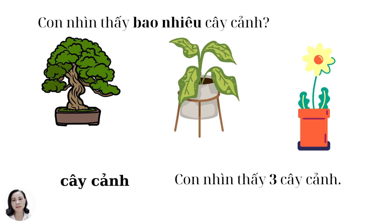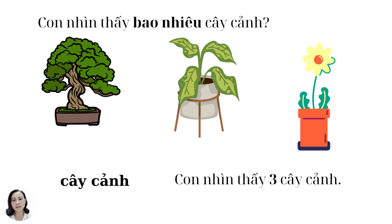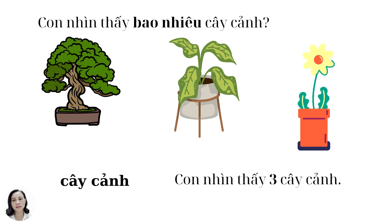And next, we learned cây cảnh. Cây cảnh. Do you understand what is cây cảnh? Look at the pictures in the video. Cây cảnh can be a bonsai, cây cảnh can be a plant, cây cảnh can be a flower, right? So cây cảnh — all the plants you put inside, can be in the bedroom, can be in the phòng khách, can be anywhere in your house for decoration, right? Con nhìn thấy bao nhiêu cây cảnh? The answer is con nhìn thấy ba cây cảnh.